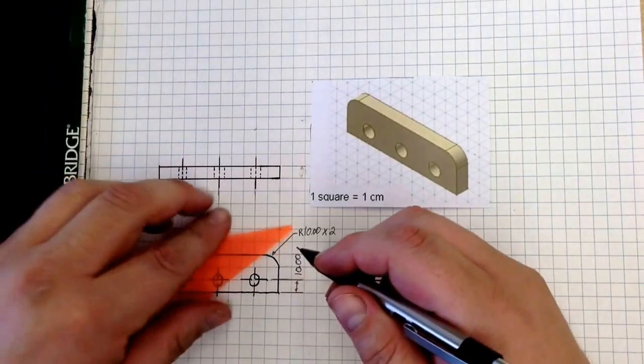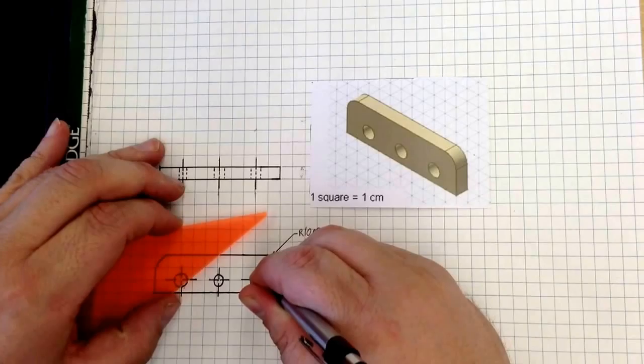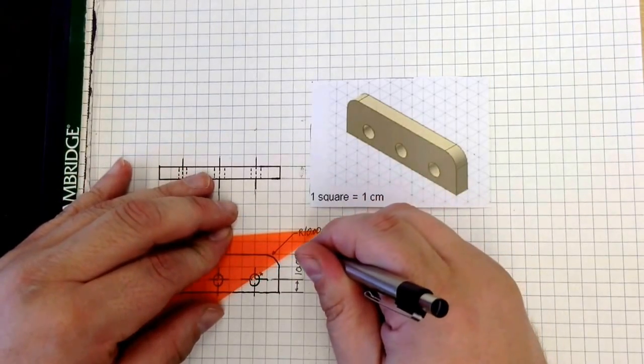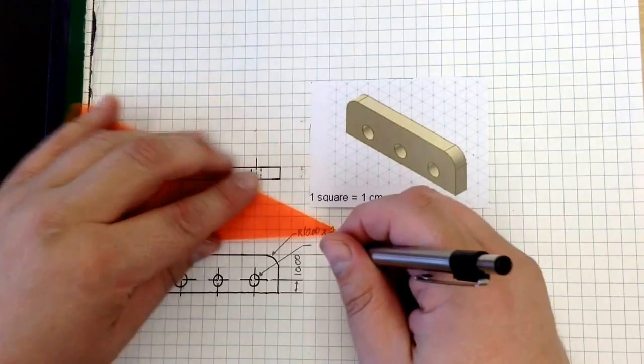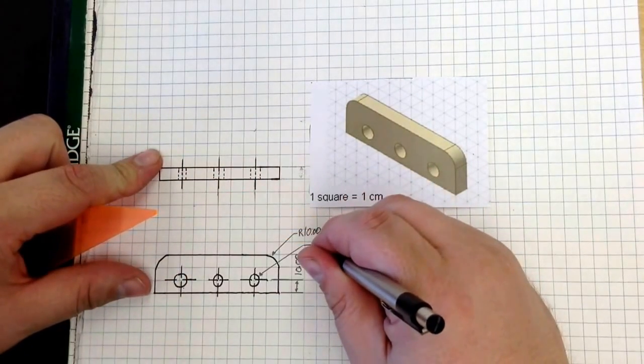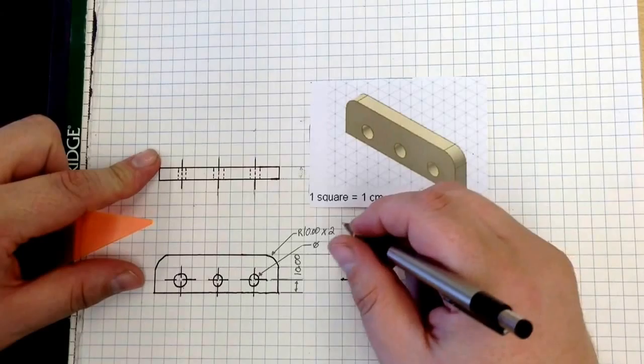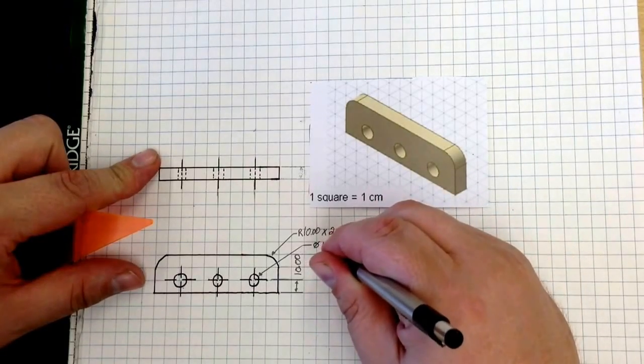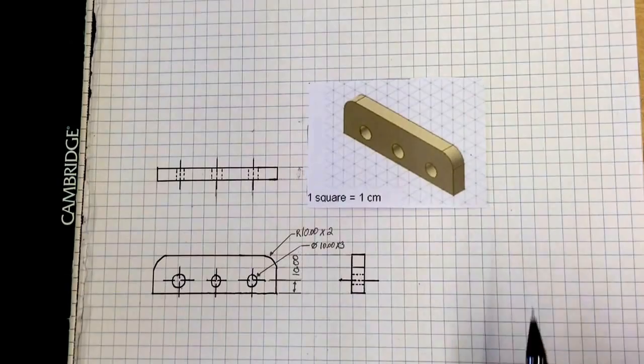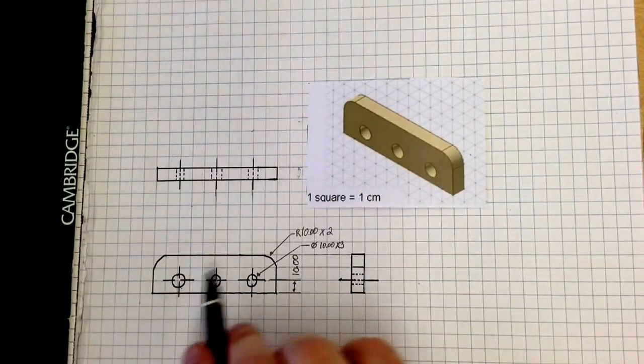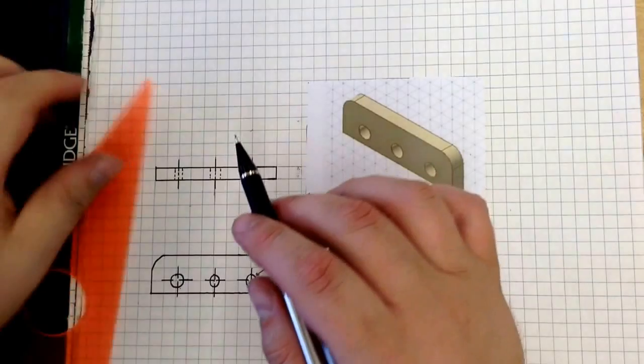Now next we have this circle to contend with. So much the same thing, have an arrow pointing it out, just like so. And this is diameter, so it's a circle with a line through it, 10.00 times 3, just like so. So we have to tell everyone where these holes actually are, so we have to locate these holes.